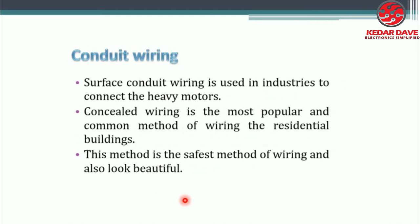Surface conduit wiring is used in industries to connect heavy motors, where the conduit is visible on the surface. Concealed wiring is the most popular and common method of wiring for residential buildings. Concealed conduit wiring is mostly used everywhere nowadays, whether in homes or industries.